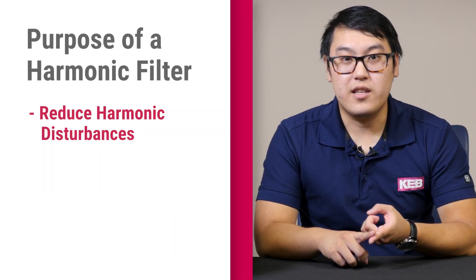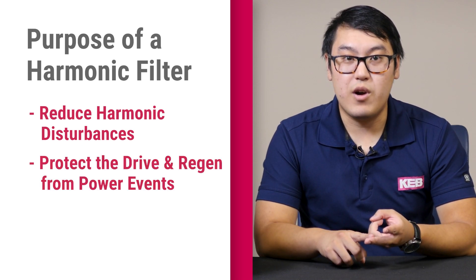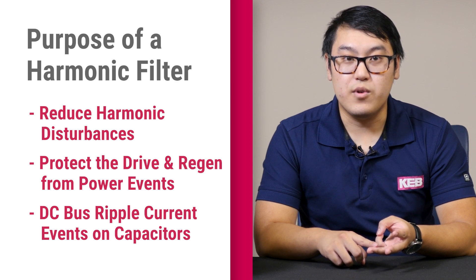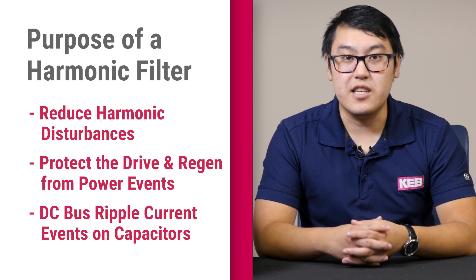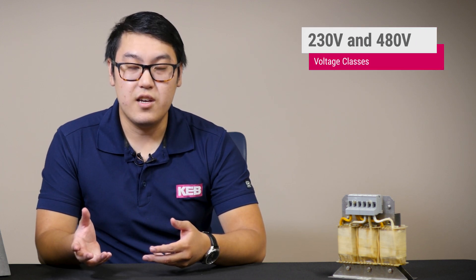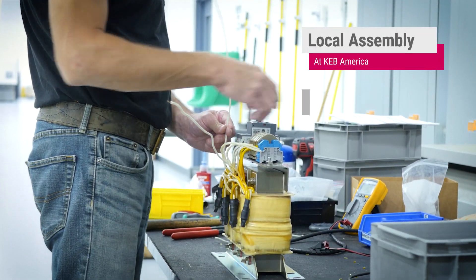What's the purpose of having a harmonic filter? It's to reduce harmonic disturbances, protect the drive in the region from power events such as a brownout, and to reduce the DC bus ripple current effects seen on the DC bus capacitors. The KEB harmonic filters are offered in both 230 and 480 voltage classes. They are all UL certified and assembled here at KEB America.